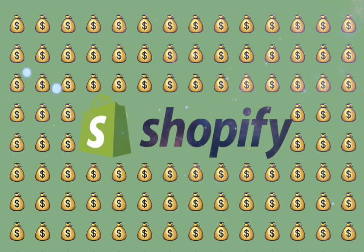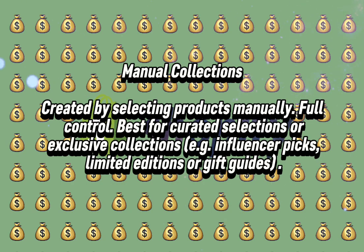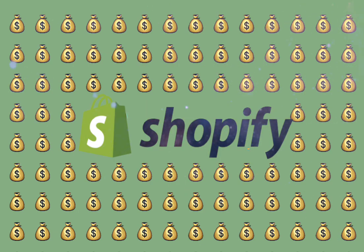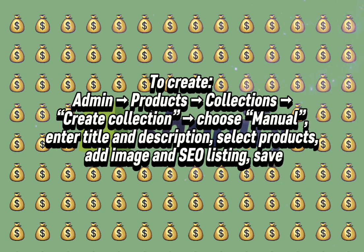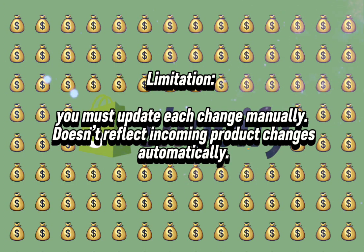Types of Collections. Manual collections: created by selecting products manually, offering full control, best for curated selections or exclusive collections such as influencer perks, limited editions, or gift guides. To create a collection, go to Admin > Products > Collections > Create Collection. Choose manual, enter a title and description, select products, add an image and SEO listing, then save. The limitation is that you must update each change manually — it doesn't reflect incoming product changes automatically.